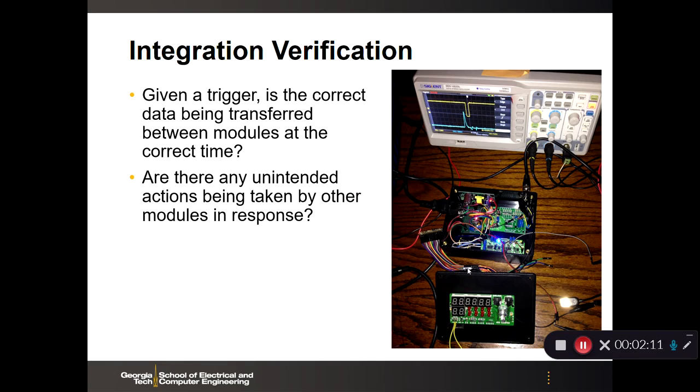So, if one module sets some discrete line from low to high, how does the downstream module react to that? Not only in time, but also in functionality.